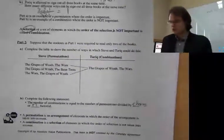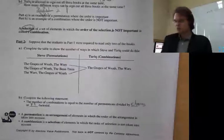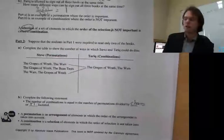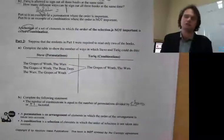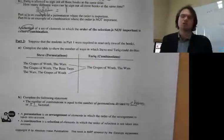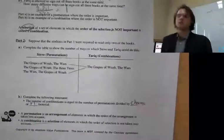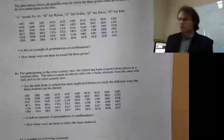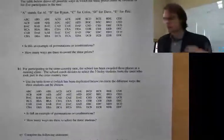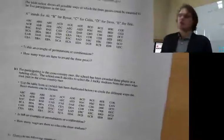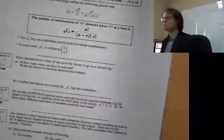Permutations are an arrangement of elements in which the order is taken into account. So: permutation — order matters; combination — order does not matter. Here are just a few more things they'll look at, but we're going to skip over that and get to some questions.